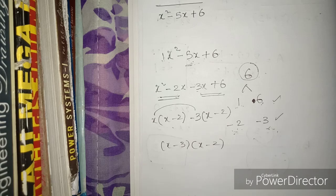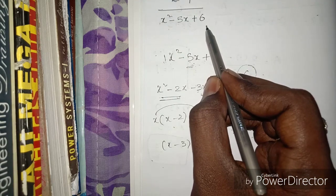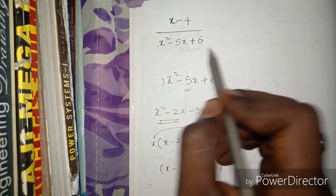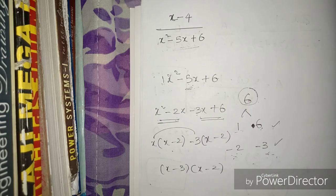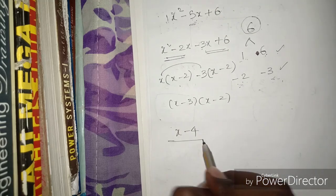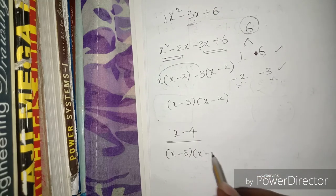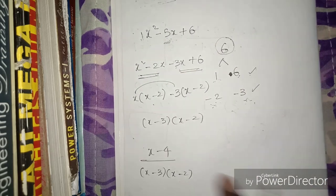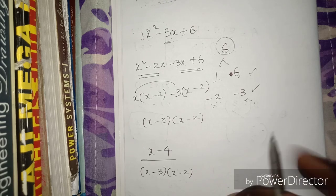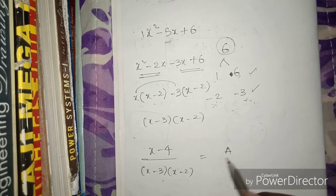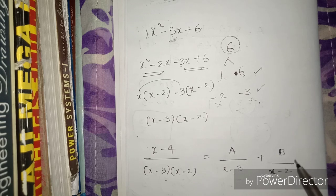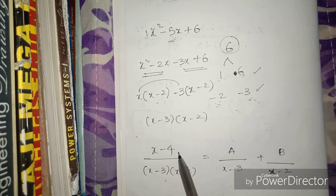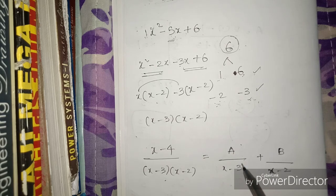So we have the quadratic factored. Now we can set up the partial fractions. The question is: (x - 4) divided by (x - 3)(x - 2) is equal to A/(x - 3) plus B/(x - 2).